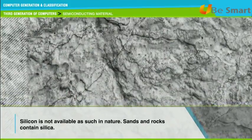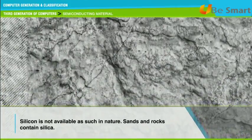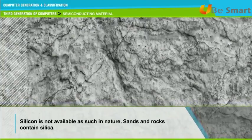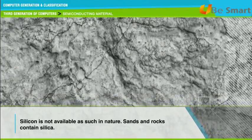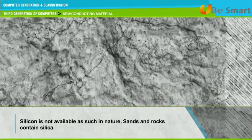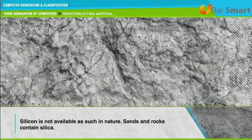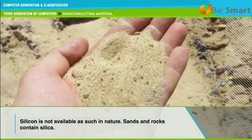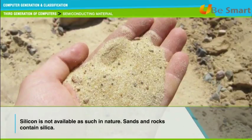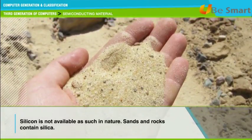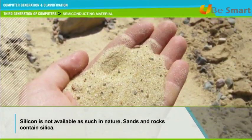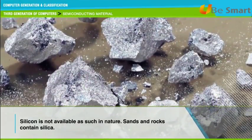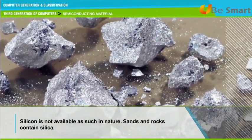Silicon is a non-metallic chemical element in the carbon family of elements and is the second most abundant element in the earth's crust. It is not available in its pure form in nature. Sand and almost all rocks contain silica. When silicon combines with other elements such as iron, aluminium, or potassium, a silicate is formed.